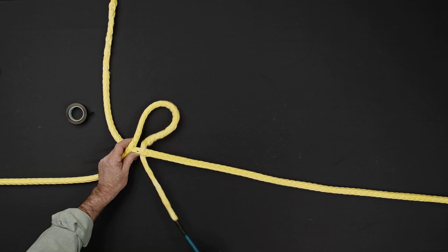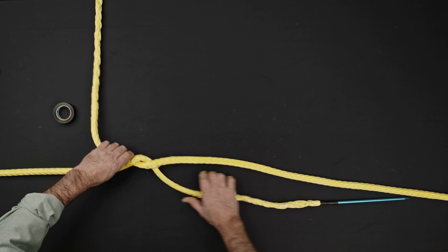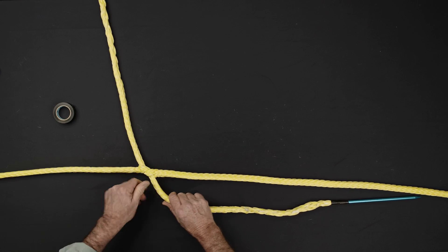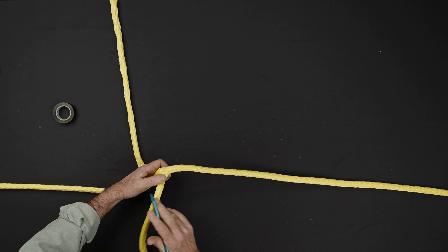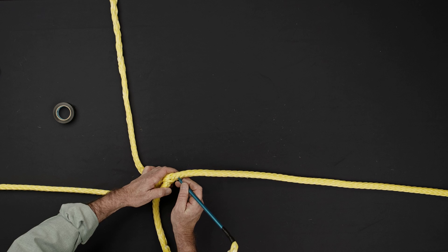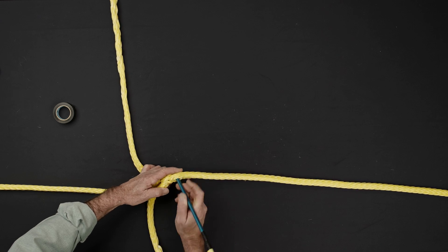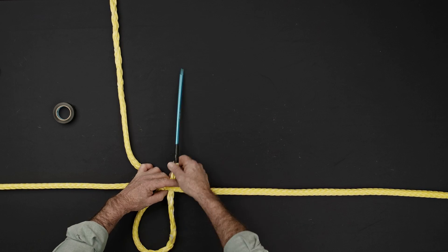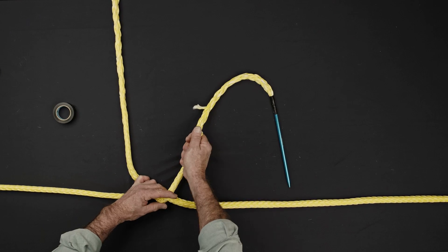Form your first brummel by passing the opposite fit through the center of the rope 3 picks down from the location the rope previously exited.